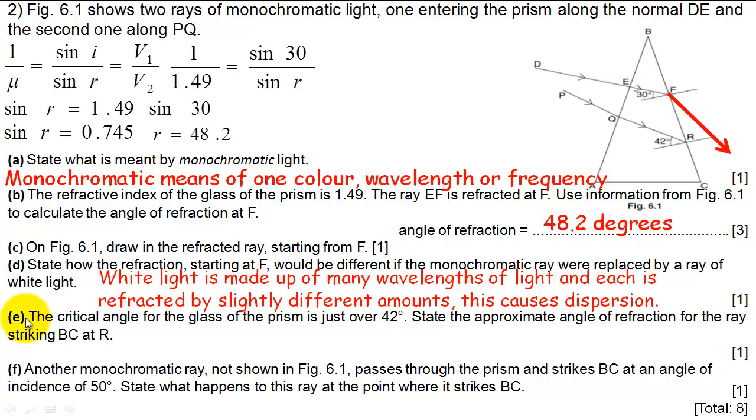Question E, the critical angle for glass of the prism is just over 42 degrees. State the approximate angle of refraction for the ray striking BC at R. Just over 42 degrees is the critical angle, which would mean that the refracted ray would be refracted by 90 degrees. So basically, the refraction at R will be 90 degrees. This is just testing your memory, really.